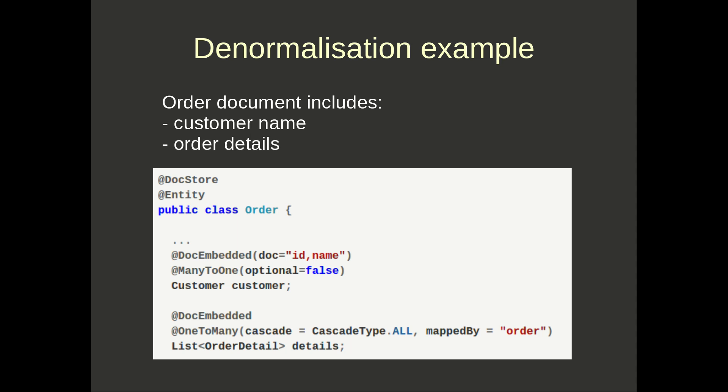To support that query we need some denormalization. Here we have an order entity, and we're going to denormalize it to include the customer name and some order details. On the customer, you can see 'doc embedded' includes the id and the name, so the customer name is also embedded into the order document indexed into the orders index. Below, there's a 'doc embedded' on order details, so the details are included in the order document as well.